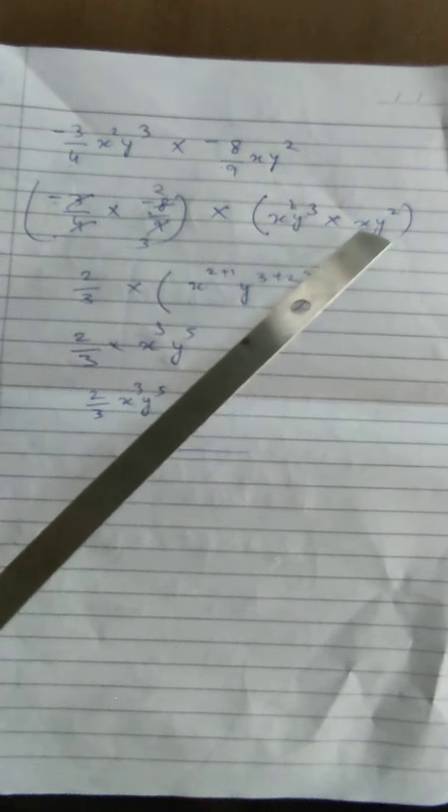Next, we are supposed to multiply the variable part. The variable part here is x squared y cubed, and then here x y squared. So x squared will be multiplied by x, giving us x cubed. Here there is no power, which means x raised to power 1. So 2 will be added with 1, giving us 3.